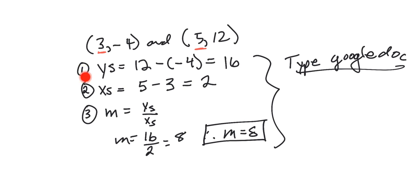Now remember, the first thing you have to do is start by taking a look at your Y's and subtracting them. In this case, we had 12 minus negative 4. Because we have the negative 4, we had to put it in a bracket.